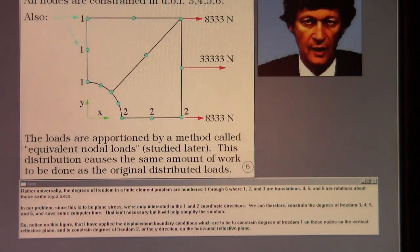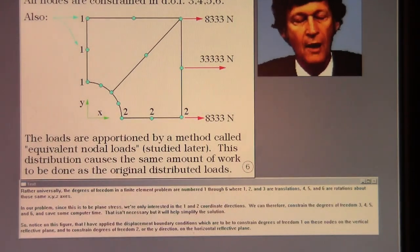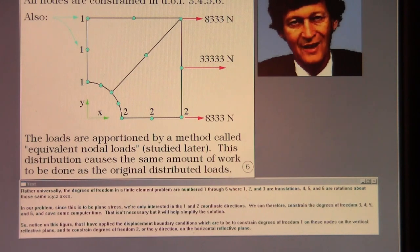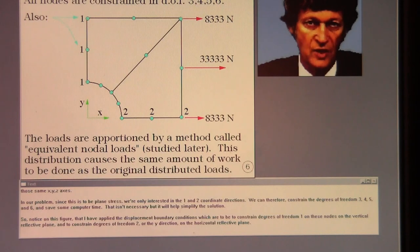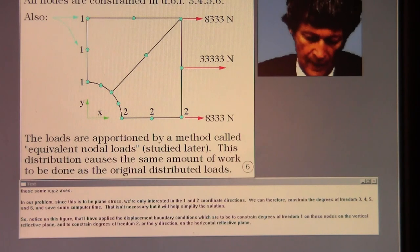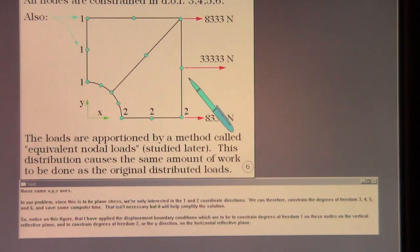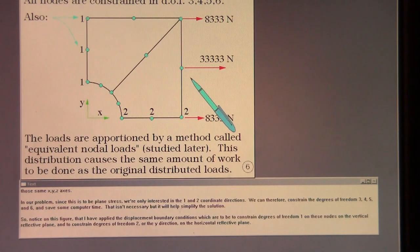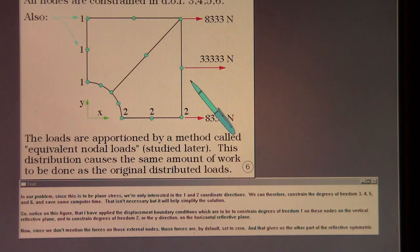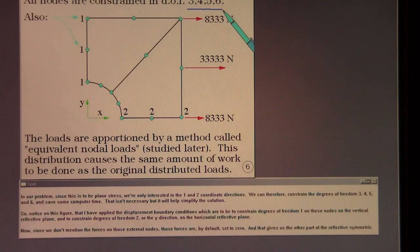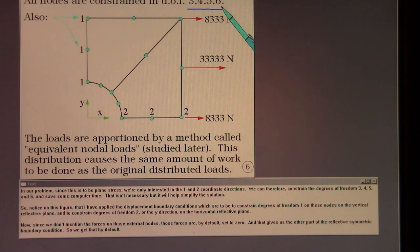Rather universally, the degrees of freedom in a finite element problem are numbered one through six, where one, two, and three are translations; four, five, and six are rotations about those same x, y, z axes. In our problem, since this is to be plain stress, we're only interested in the one and two coordinate directions. We can therefore constrain the degrees of freedom three, four, five, and six and save some computer time. That isn't necessary, but it will help simplify the solution.